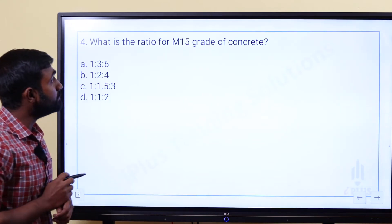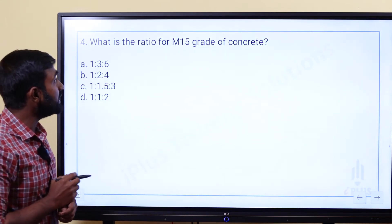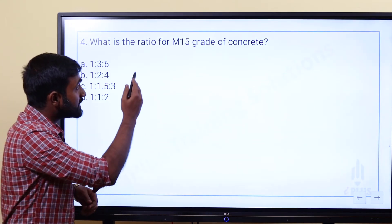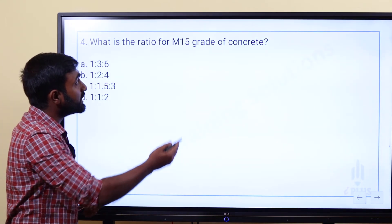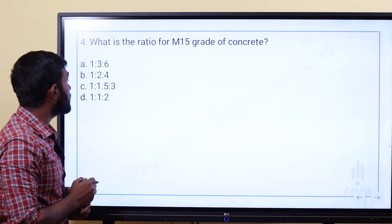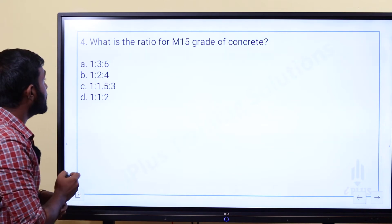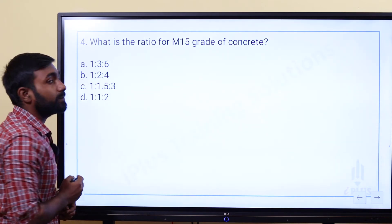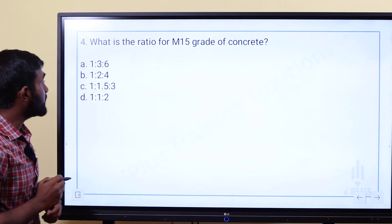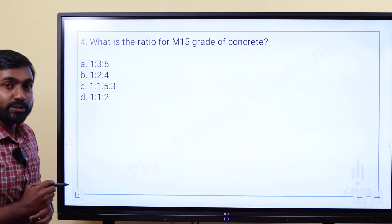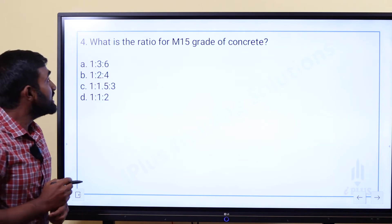What is the ratio for M15 grade of concrete? The ratio for M15 is 1:2:4 — that is Option B.